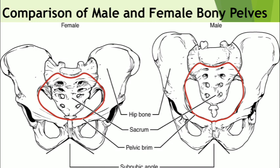The pelvic inlet is heart-shaped and narrow in the male, and oval, round, and wide in the female. The pelvic outlet is comparatively small in the male and large in the female. The pubic arch and subpubic angle is narrow — less than 70 degrees — in the male, and wide in the female. The obturator foramen is round in the male and oval in the female. The acetabulum is large in the male and small in the female. The greater sciatic notch has an inverted D-shape in the male and is approximately 90 degrees in the female.